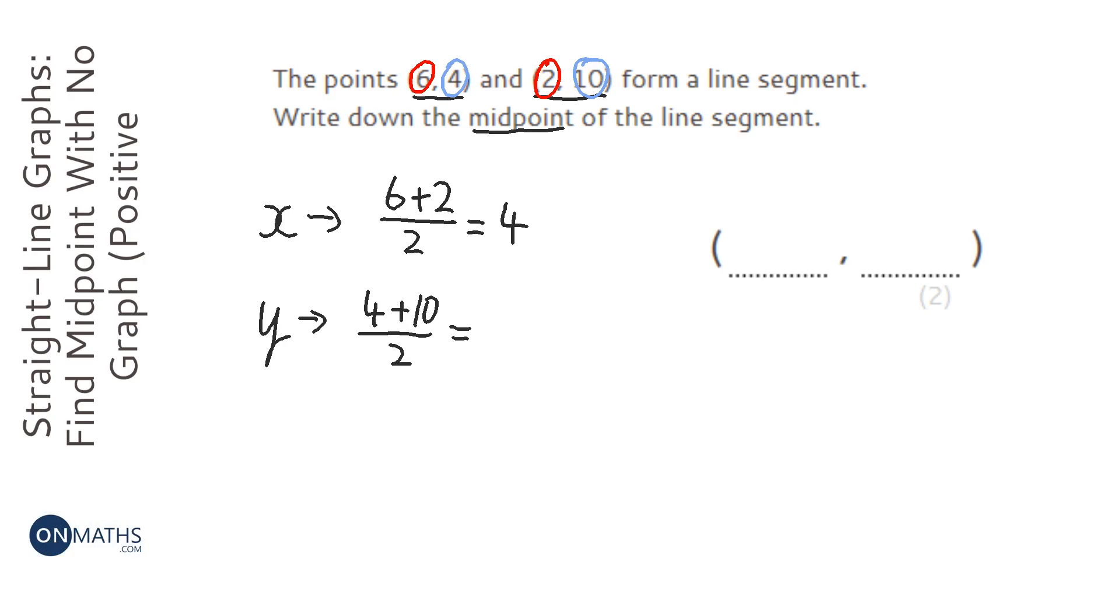So 4 plus 10 is 14, divide by 2 is 7. So my midpoint is 4, 7, and you can just check that. Halfway between 6 and 2 is 4, halfway between 4 and 10 is 7.